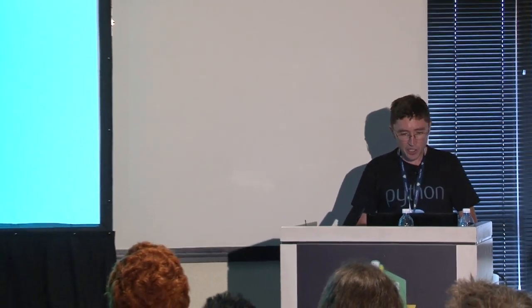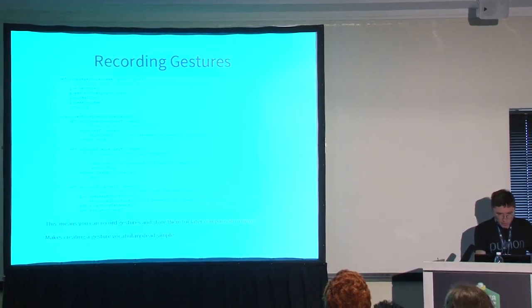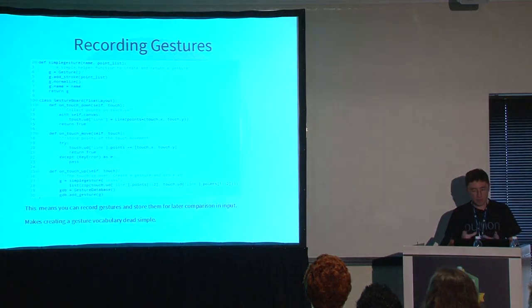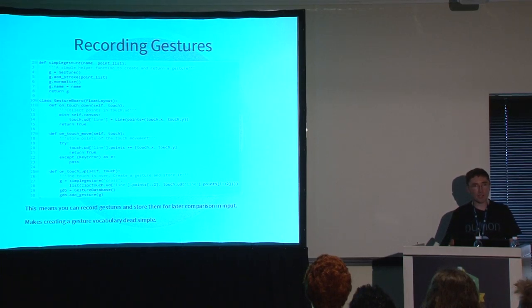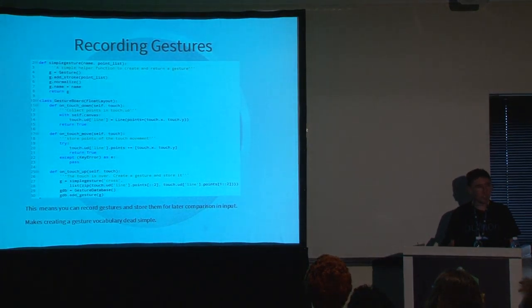What makes it even easier is that in Kivy you can record touches into that gesture database and then just query it later. On touch_down, you start the line. On touch_move, you basically just add the points of your touch to that line. Then on touch_up, you create a simple gesture from that, store it to a database, give it a name, and you've got a database you can look up against. Kivy does all that normalization and comparison in the background, so it makes it really dead easy to use touch in an exciting way — because you can define your own gestures entirely, record them, and you've got an algorithm that automatically matches input to that.